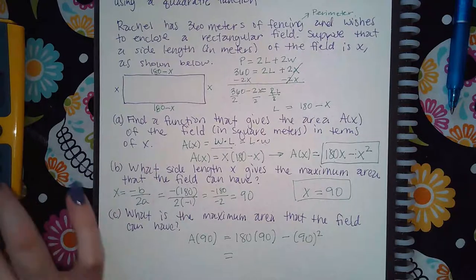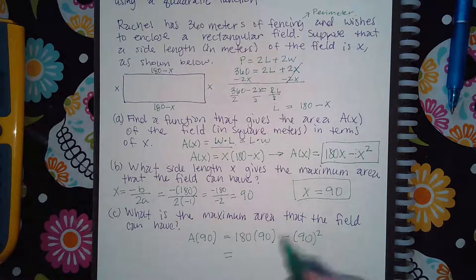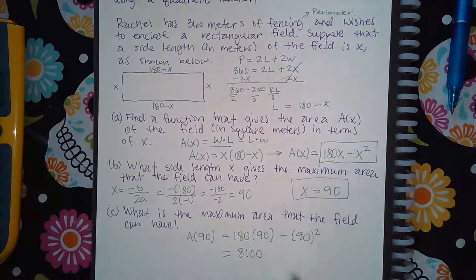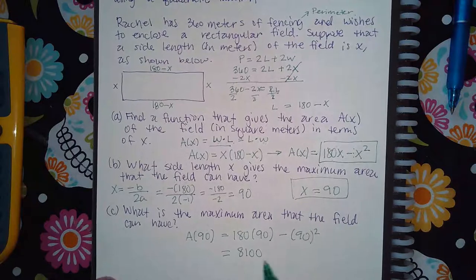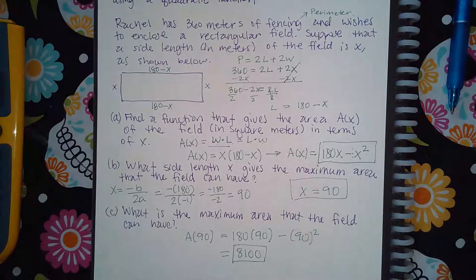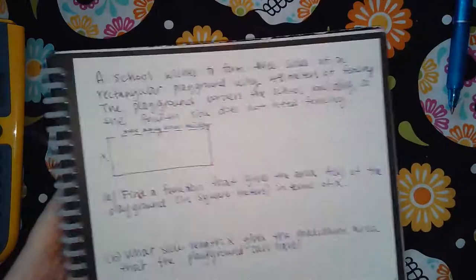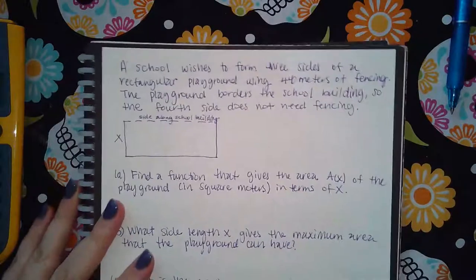Plugging x = 90 into the area function: 180(90) − 90² = 8100 square meters. That is the maximum area the rectangle can cover with the fencing available. That's the first example.